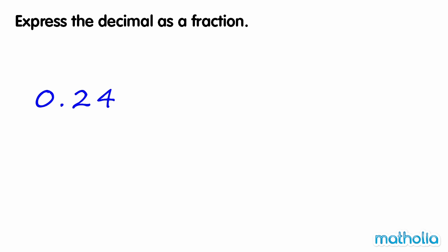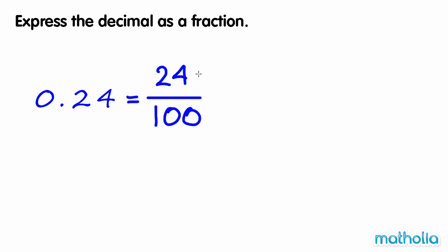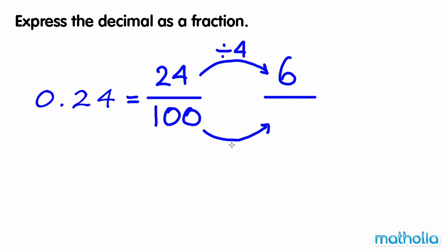Express the decimal as a fraction. 0.24 is equal to twenty-four hundredths. We can write this as a fraction, twenty-four over one hundred. To simplify the fraction, let's divide the numerator and the denominator by four. Twenty-four one-hundredths is equal to six twenty-fifths. So 0.24 is equal to six twenty-fifths.